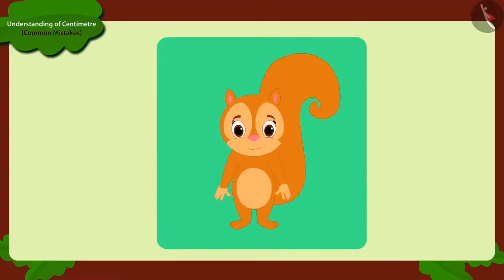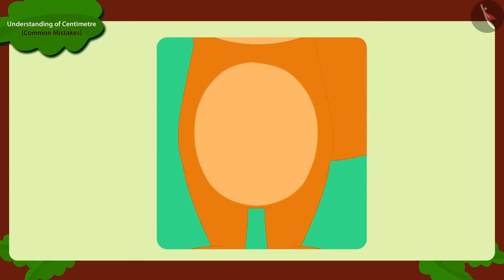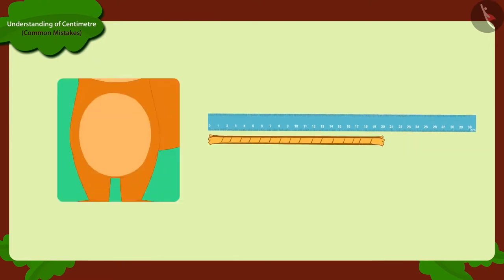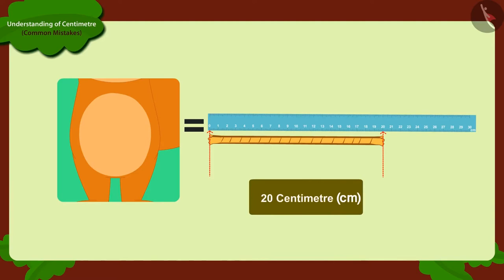Suppose, we have to measure the waist of Chanda. So, we will first measure her waist with a rope. Then, we will put that rope next to the ruler. What is the measurement of this rope? It is the right size of the waist of Chanda. In this way, how many centimetres is the correct measurement of Chanda's waist? Twenty centimetre.